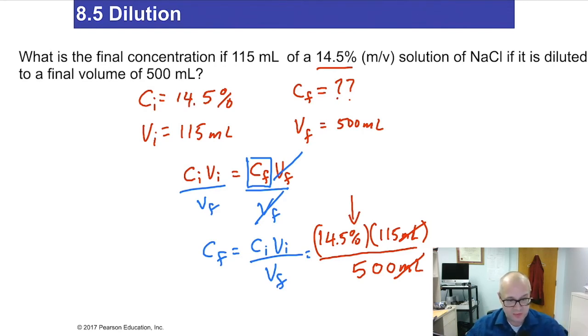Now, before we even grab a calculator and crunch numbers, let's look at logic. We're adding solvent. We're going from 115 milliliters to 500 milliliters. So we're adding solvent. So the concentration had better go down. If the concentration goes up, we've made a mistake in our math. We put the right numbers in the wrong place, if you will.